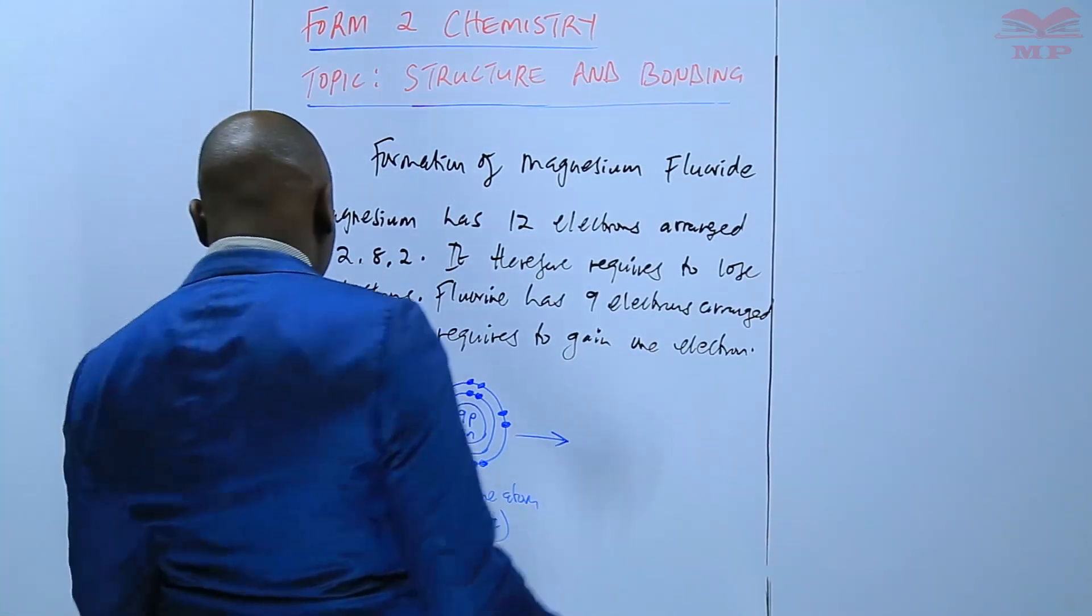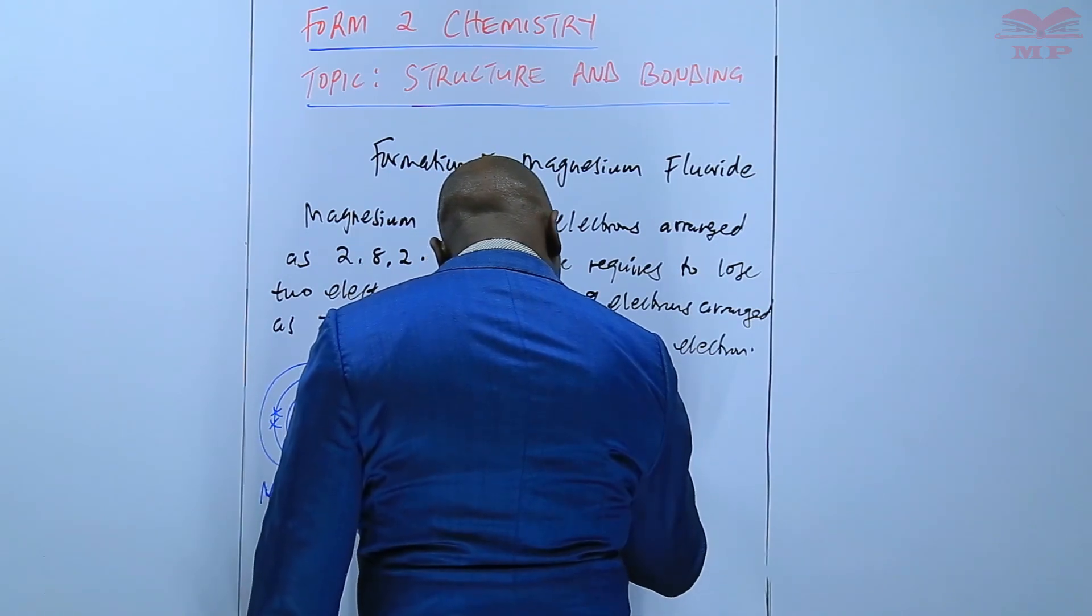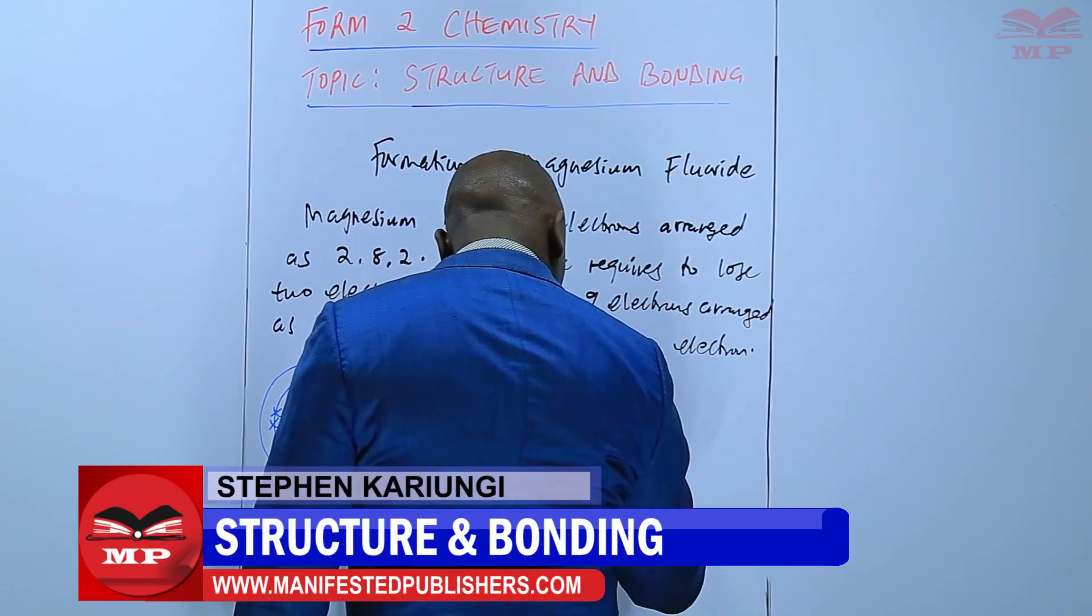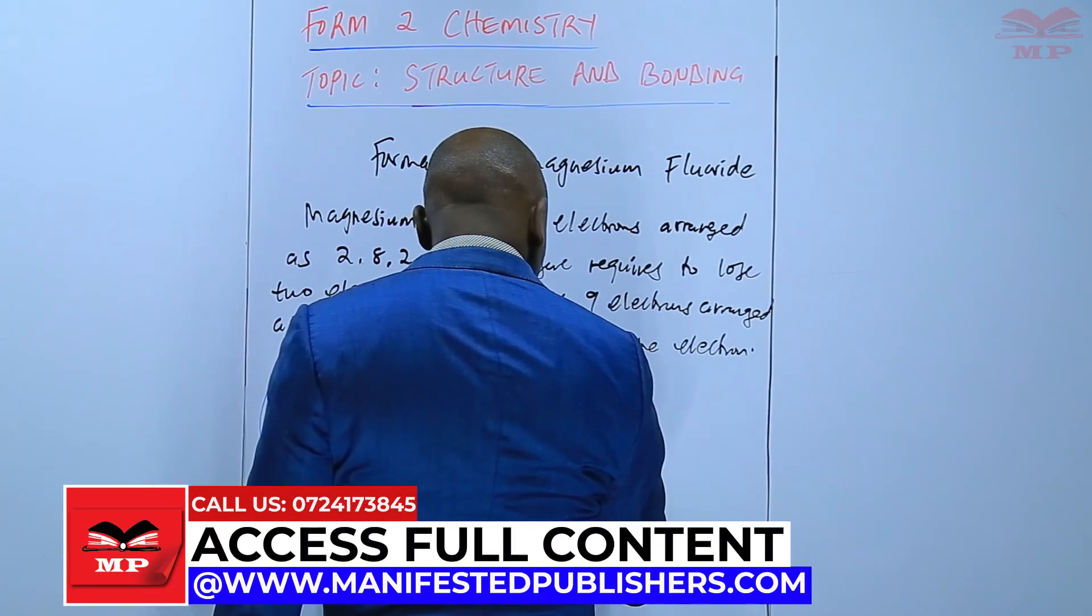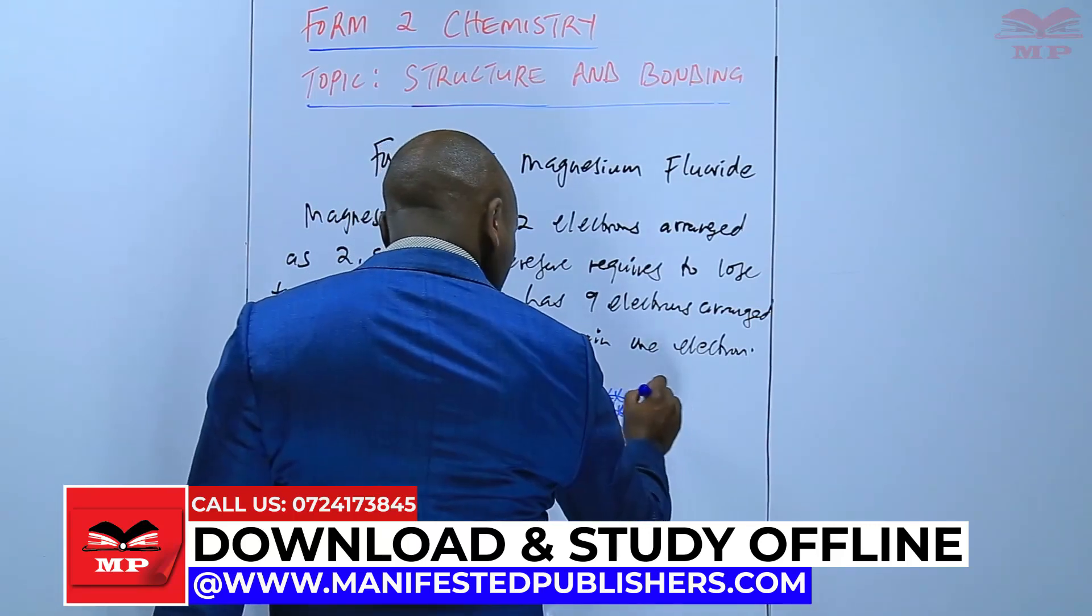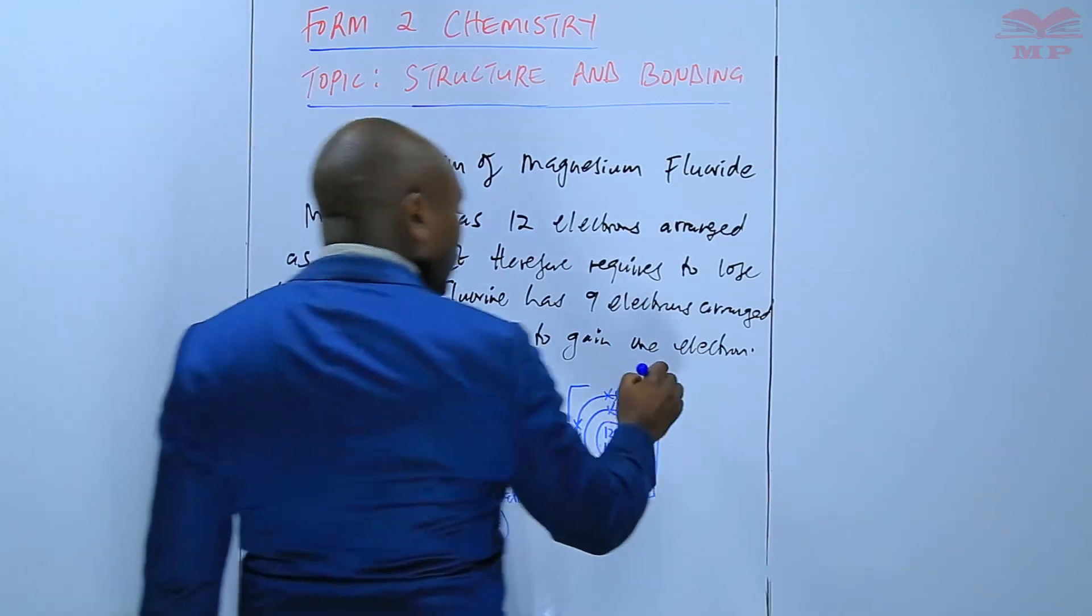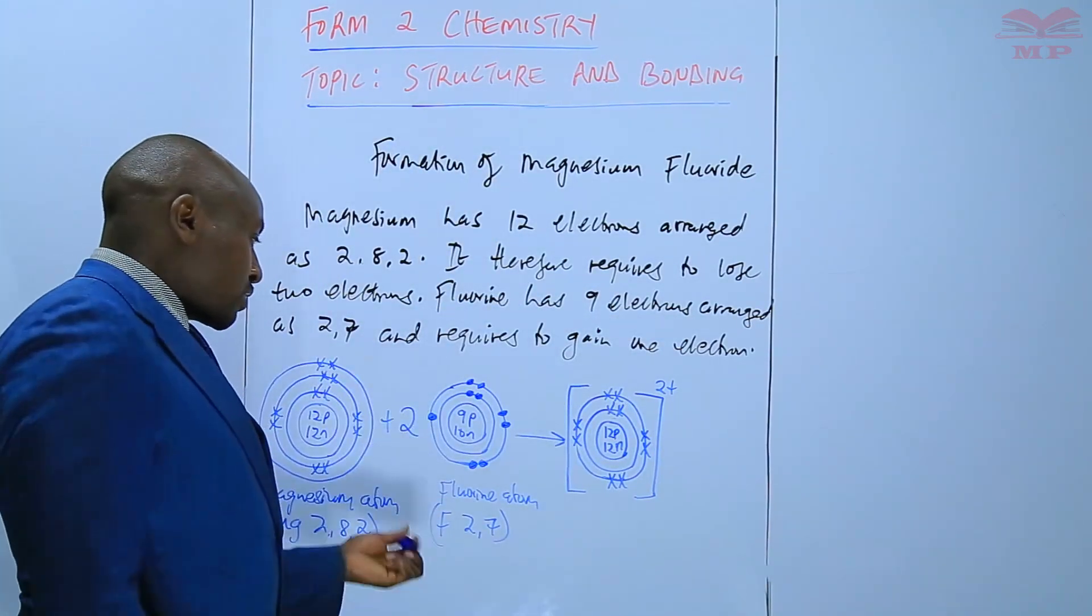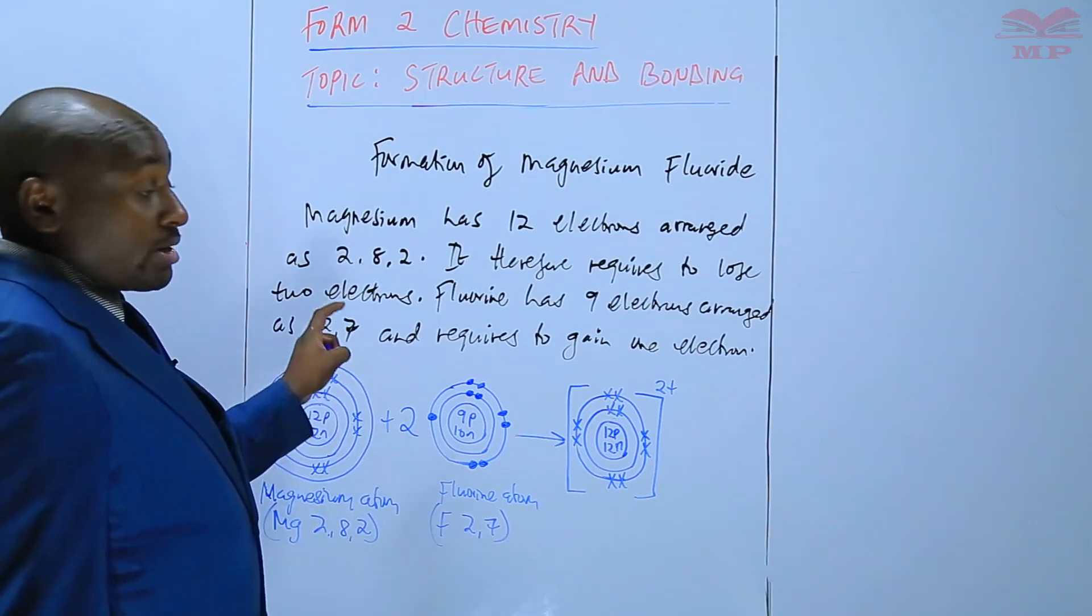When you draw it, now we have magnesium 12P, 12N after it has lost the two electrons. The number of protons are 12 and the electrons are 10, so we have an excess of two protons, two positive charges. There are two fluorine atoms. You can either put a two here to show that there are two, or you can draw them separately. Each will gain only one of the two that are lost by magnesium.